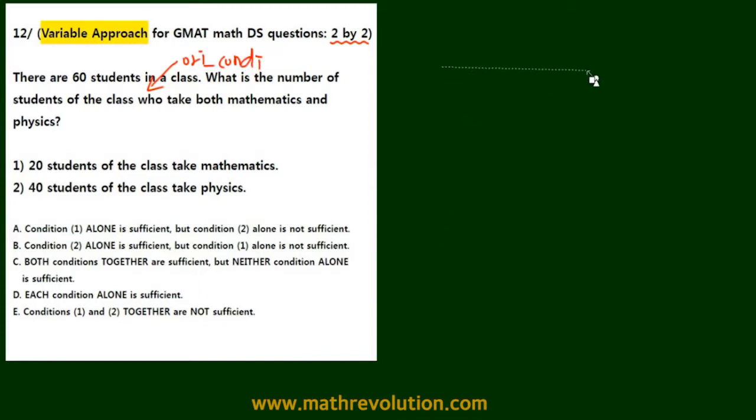What we are going to do is make a 2 by 2 table like this. Now what we do is fill it with the information given in the original condition. Here is math and not math, not taking math. Here we have physics and not taking physics.